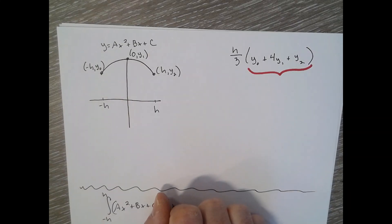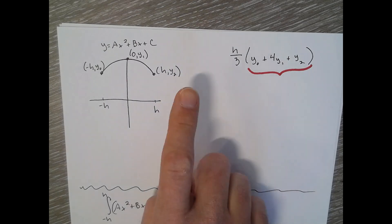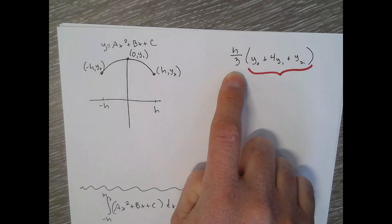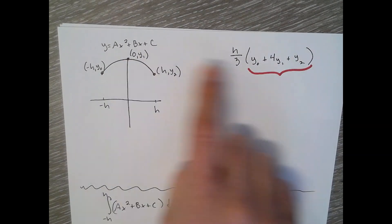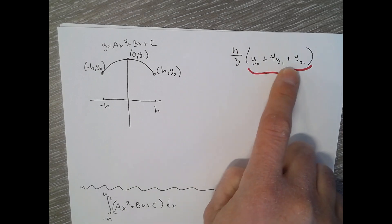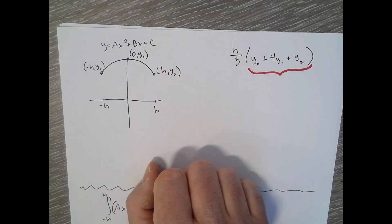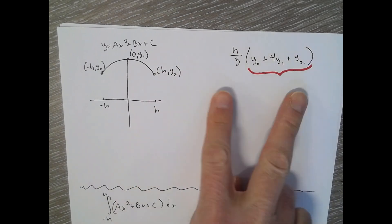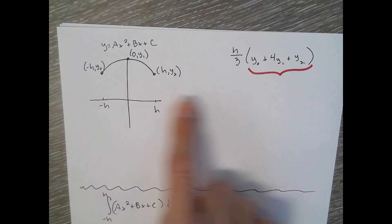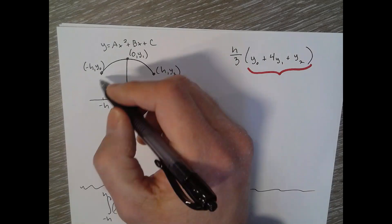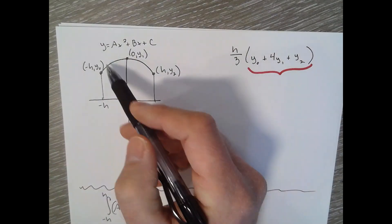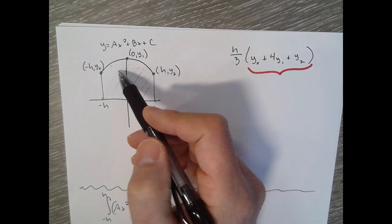Okay, so using Simpson's rule, it would be h over three times your first y value, four times the second one, then times, or plus, your last y value. Okay, so see if you could figure out the area under the curve here using Simpson's rule.